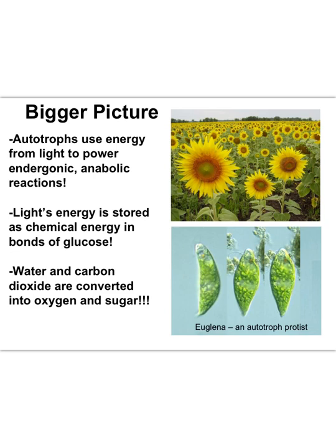Now that we've added some more knowledge about chemical reactions, we can appreciate that the chemical reactions of photosynthesis are endergonic anabolic reactions. The energy to power these reactions comes from the sun, and the principal molecule built — glucose — stores that light energy as chemical energy in the chemical bonds of glucose.